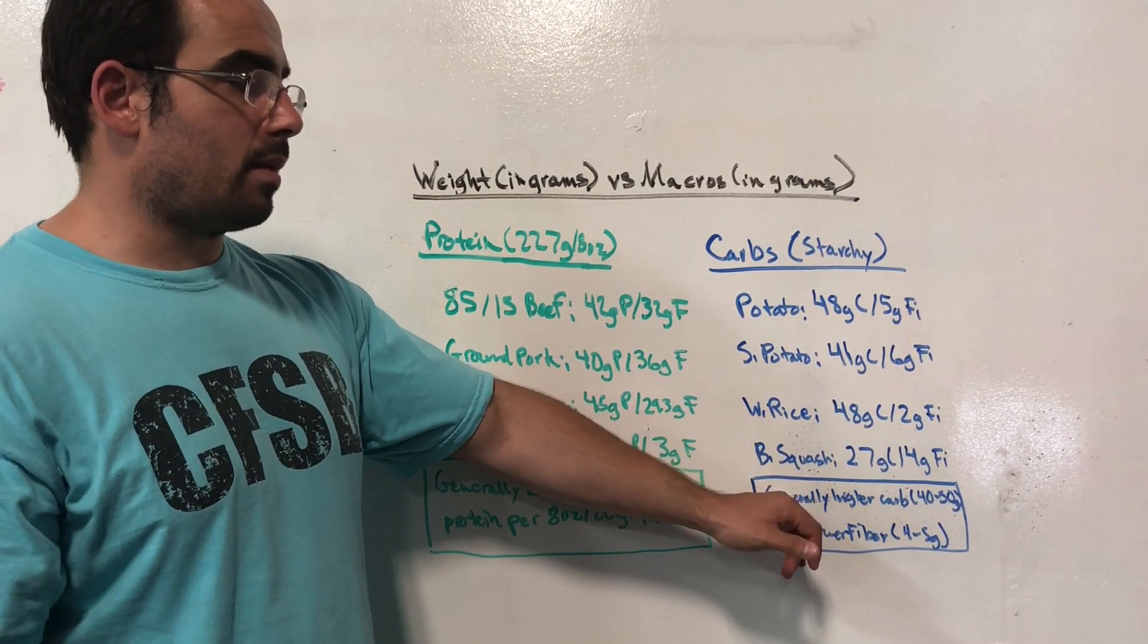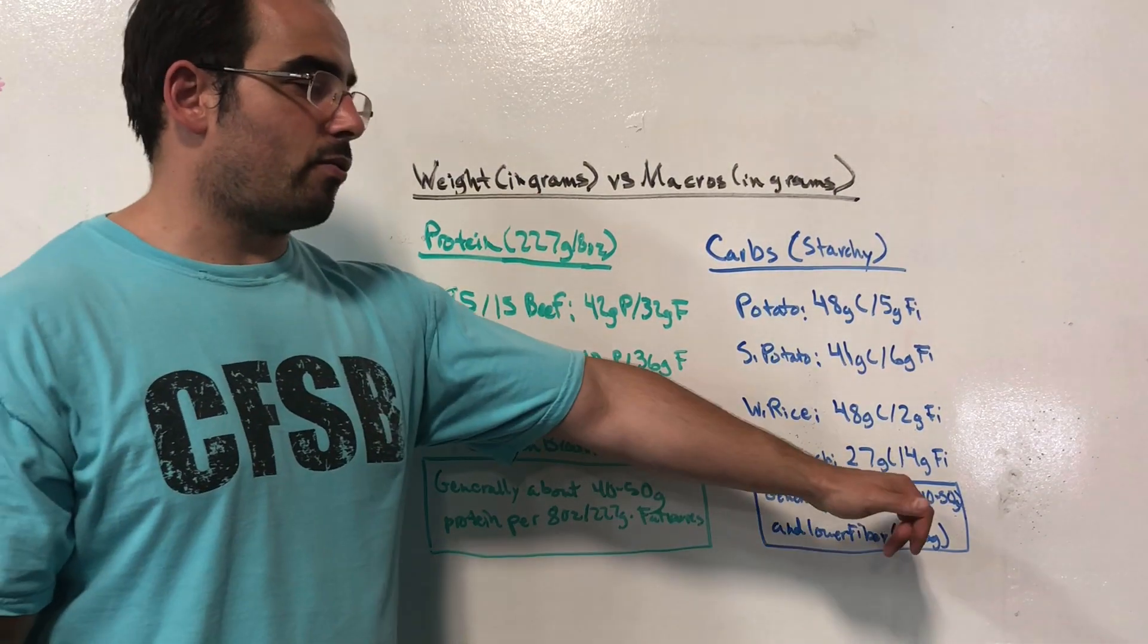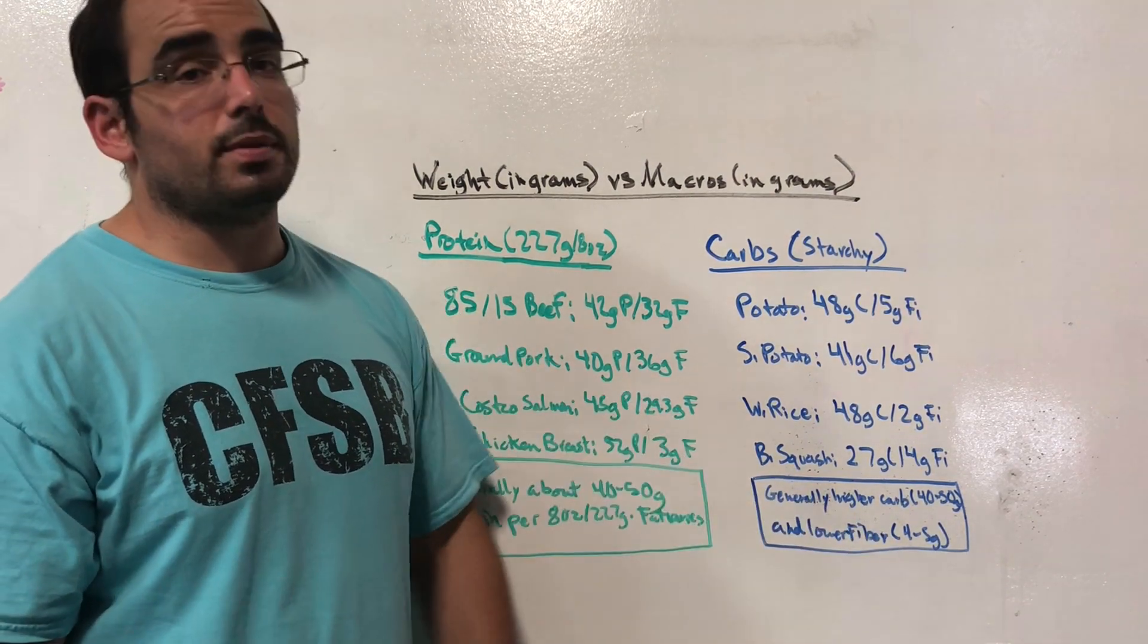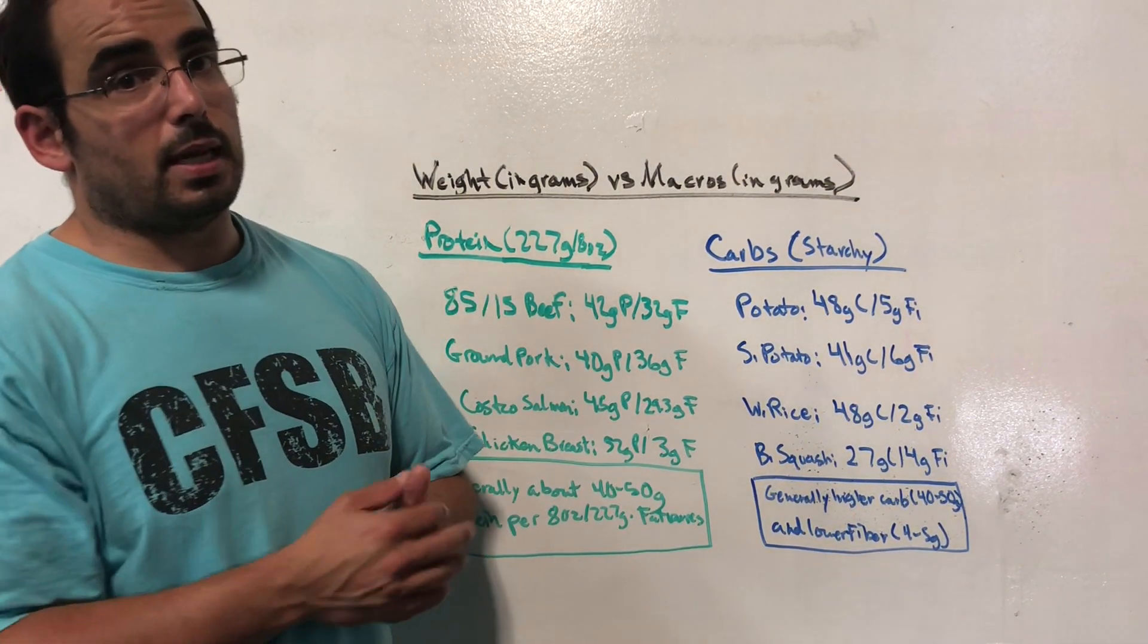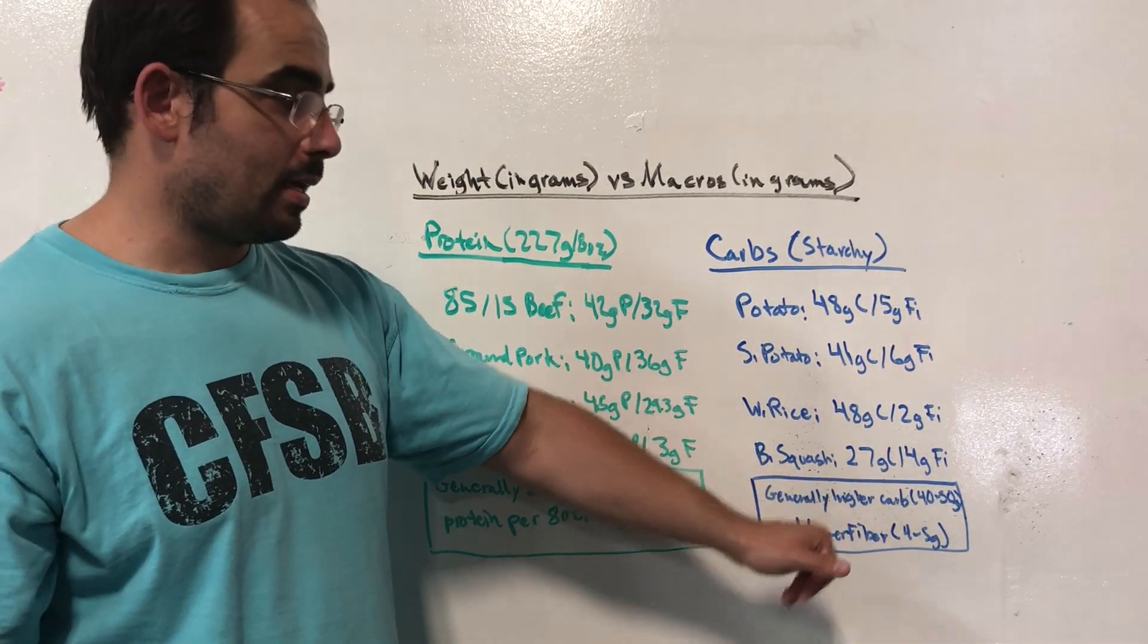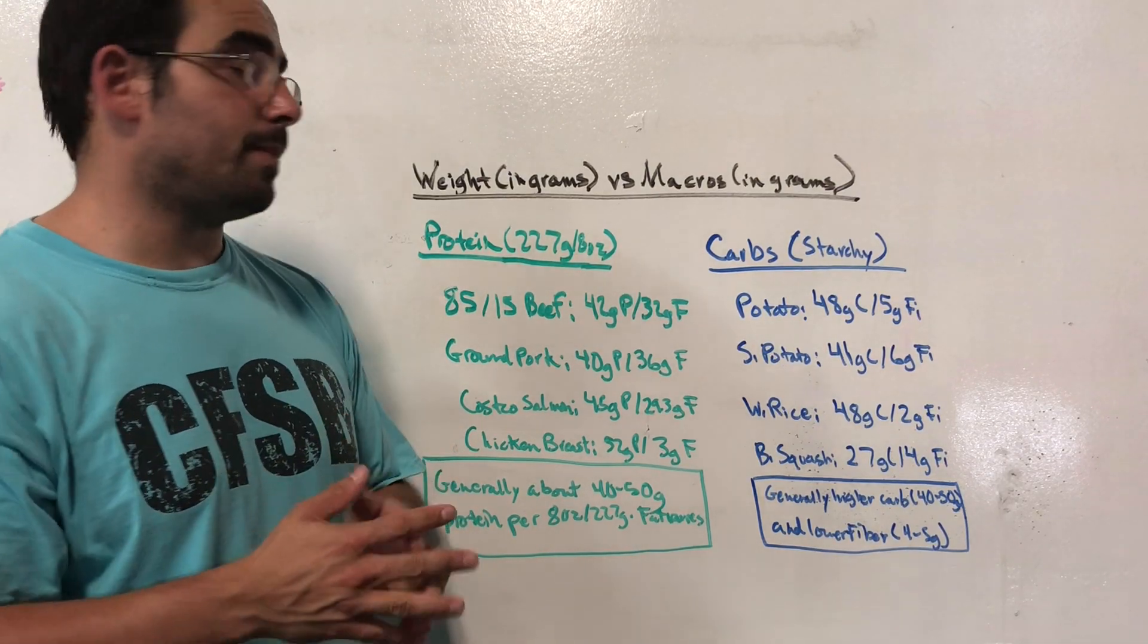So generally speaking, with higher carb starchy carb foods, if you have an eight ounce serving, it's gonna be about 40 to 50 grams of carbs and about four to five grams of fiber. Whereas a vegetable, for example, would be very low carb, like spring mix is almost nothing and has more fiber. So it's just the opposite.